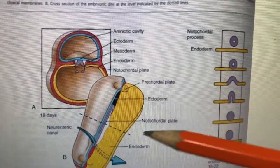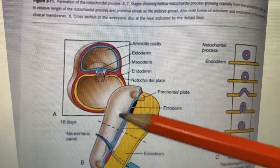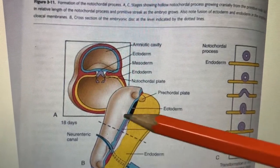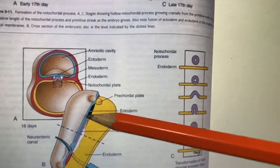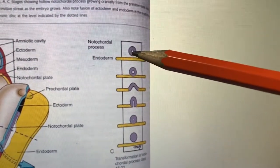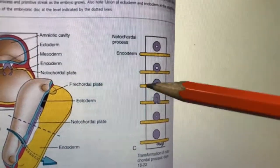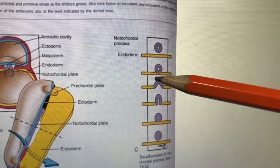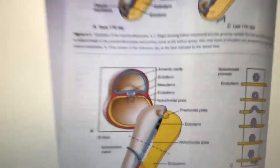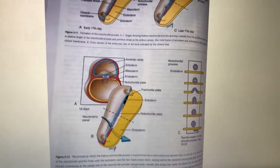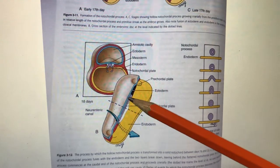The notochordal process forms an axis beneath the ectoderm. The surrounding area of the notochord process transforms into the vertebral column and vertebral muscles. It sends signals to the ectoderm. Above the notochord is the ectoderm. The notochord sends signals and fold formation occurs in the upper part.